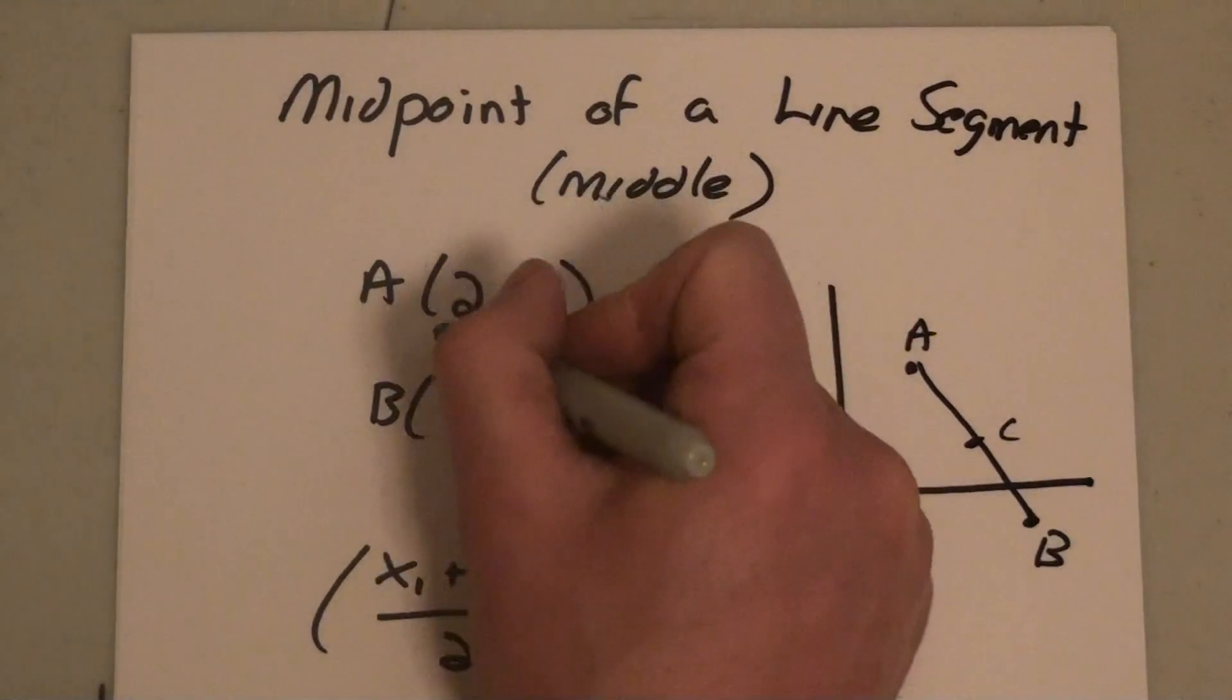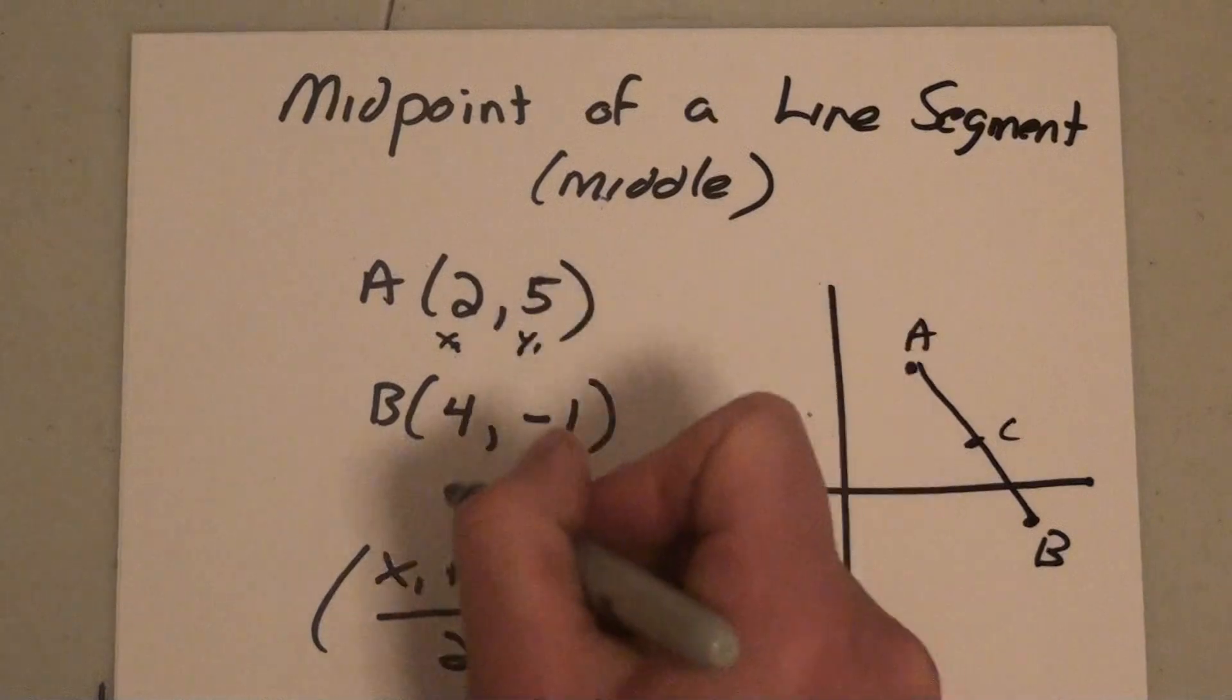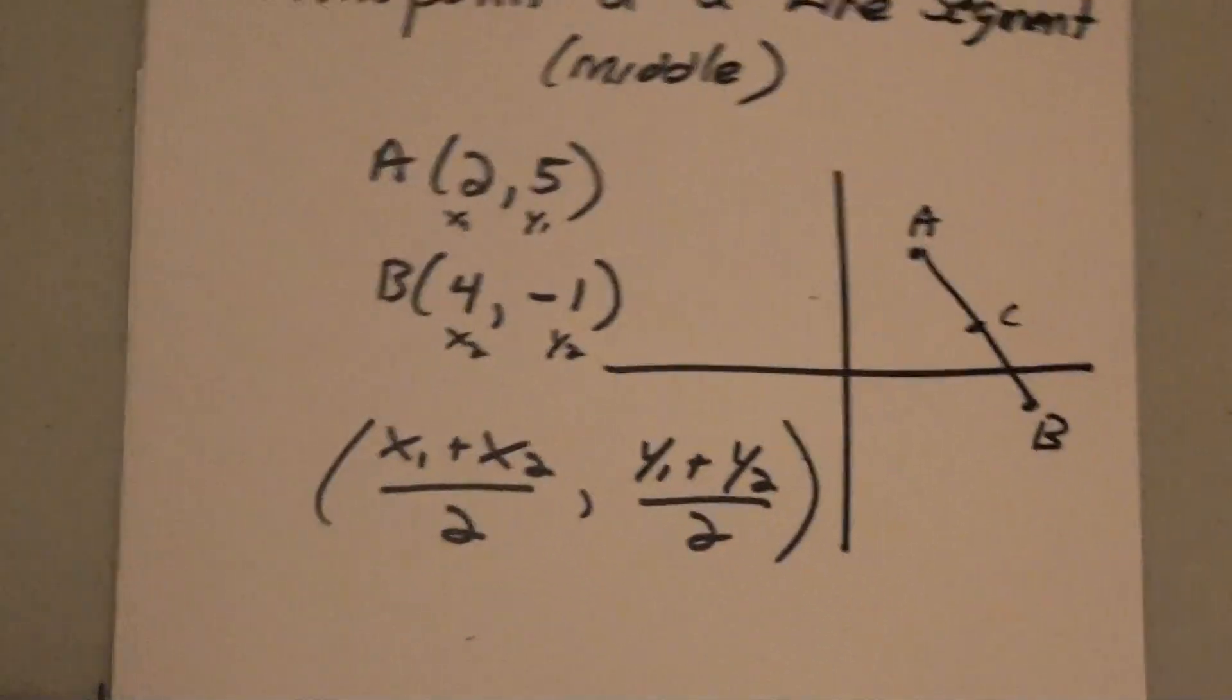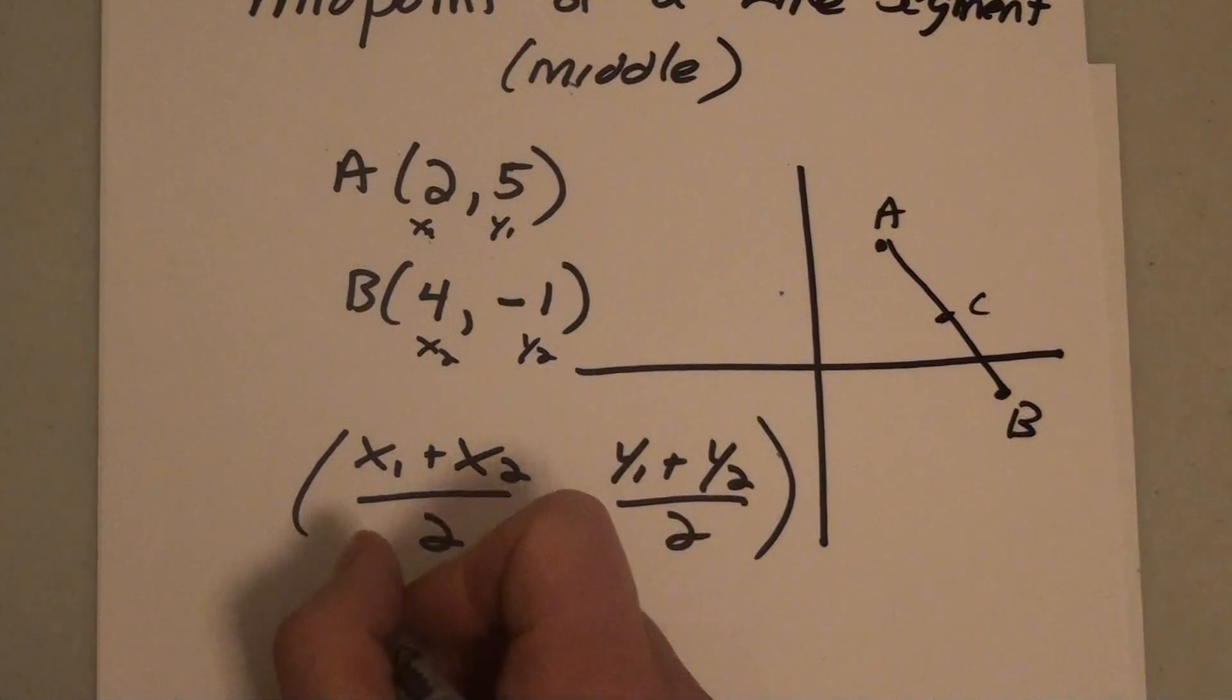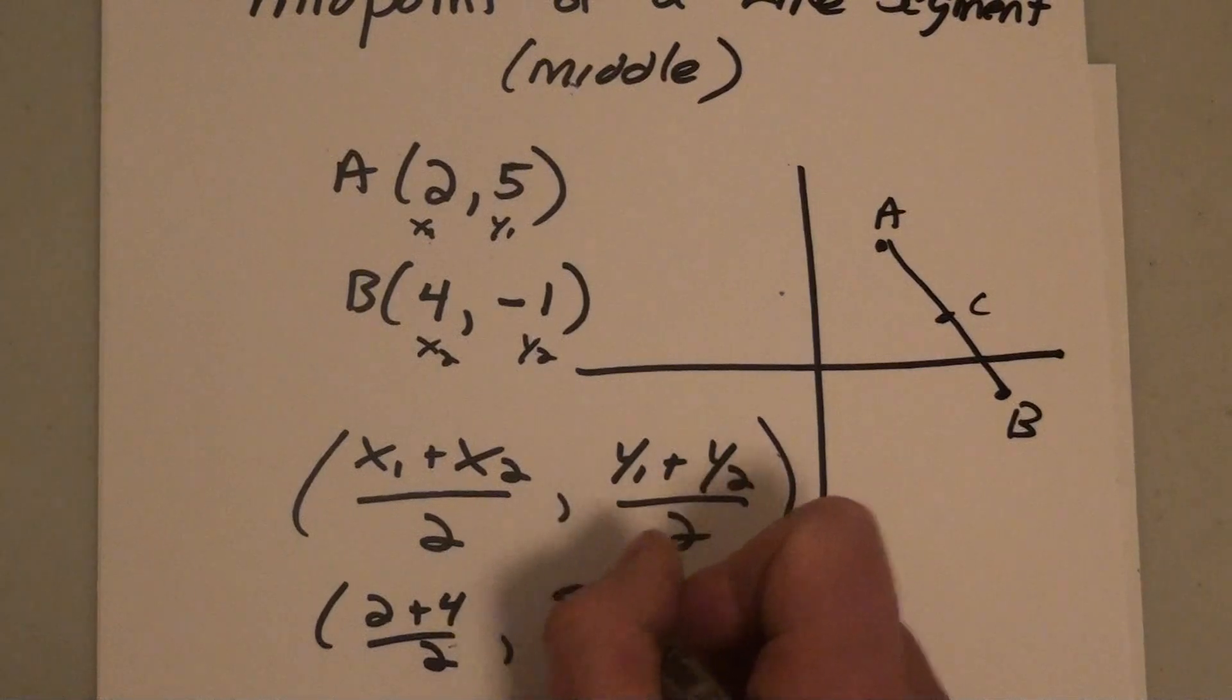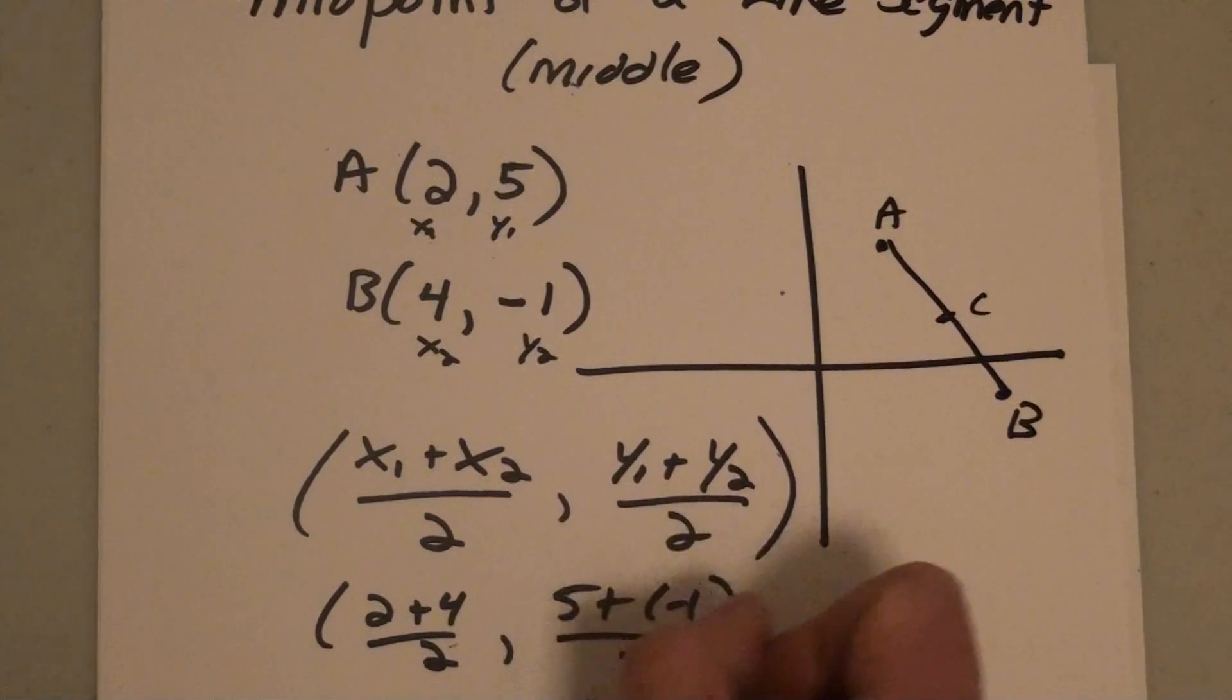So if I take my point A, I want to call it x1, y1, and my point B will be x2, y2. I'll put those points into my formula, so it'll be 2 plus 4 divided by 2, and it'll be 5 plus negative 1 divided by 2.